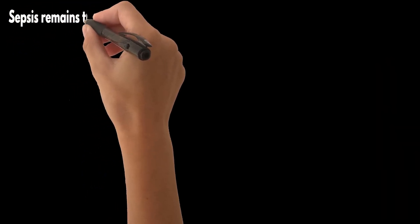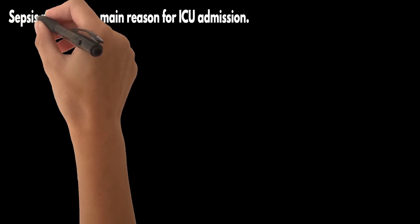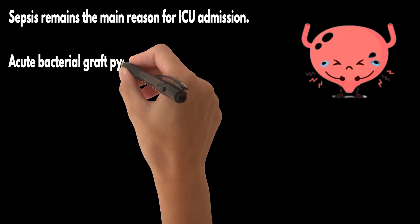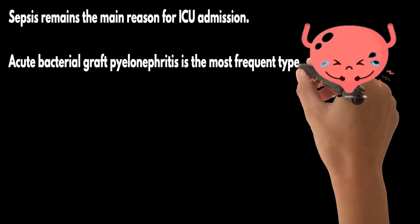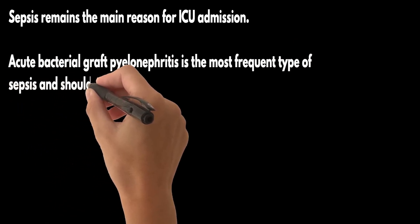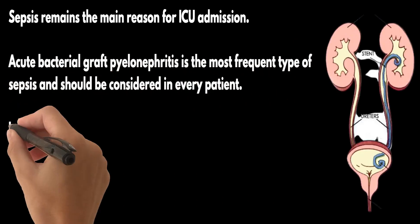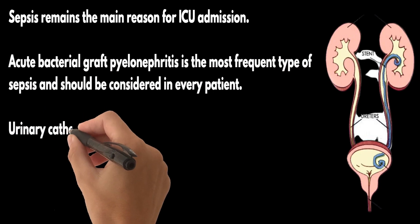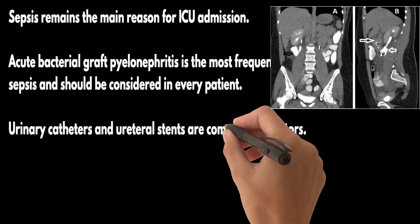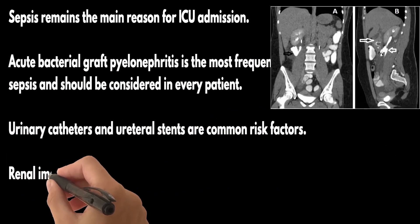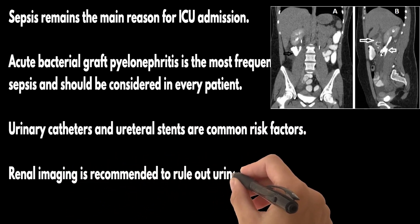Sepsis remains the main reason for ICU admission. Acute bacterial graft pyelonephritis is the most frequent type of sepsis and should be considered in every patient. Urinary catheters and ureteral stents are common risk factors, and their removal or replacement needs to be discussed to avoid recurrence. Renal imaging is recommended to rule out urinary tract obstruction, renal abscess, or urine leakage.